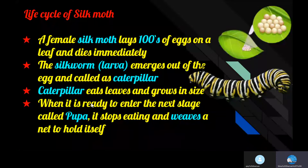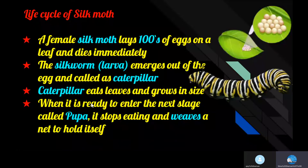The silkworm or larva emerges out of the egg after hatching. This larva is called a caterpillar. The caterpillar feeds on leaves and grows in size. During this period, the silkworm or larva sheds its skin and undergoes molting four times. When it is ready to enter the next stage of its life called pupa, it stops feeding and leaves a net to hold itself.